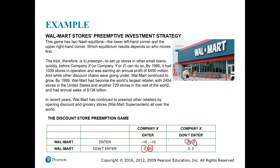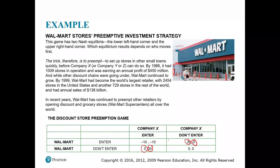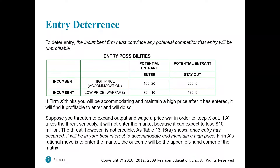By 1999, Walmart had become the world's largest retailer with 2,454 stores in the United States and another 729 stores worldwide, with annual sales of 138 billion. Walmart continued to preempt other retailers by opening discount and grocery stores — Walmart Supercenters — all over the world. This illustrates the possibility of creating entry deterrence: to deter, the incumbent firm must convince potential competitors that entry will be unprofitable.